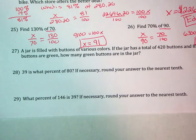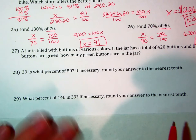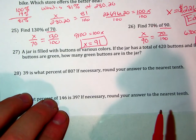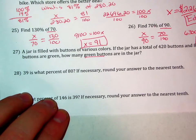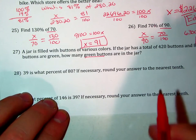Problem 27: A jar is filled with buttons of various colors. If the jar has a total of 420 buttons and 85% of the buttons are green, how many green buttons are in the jar?